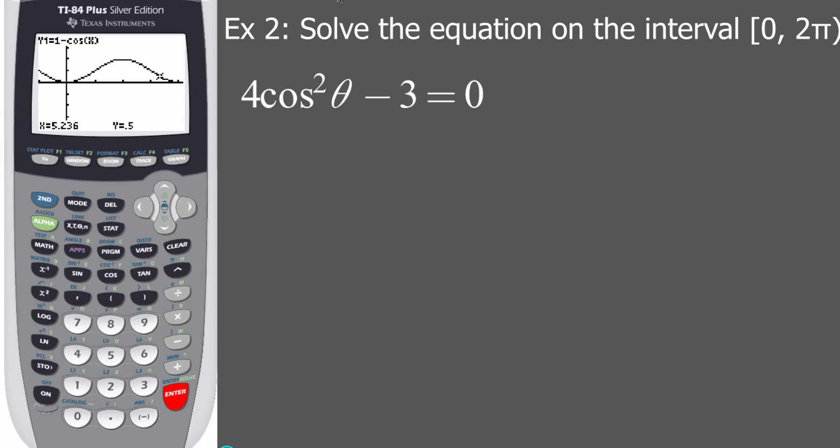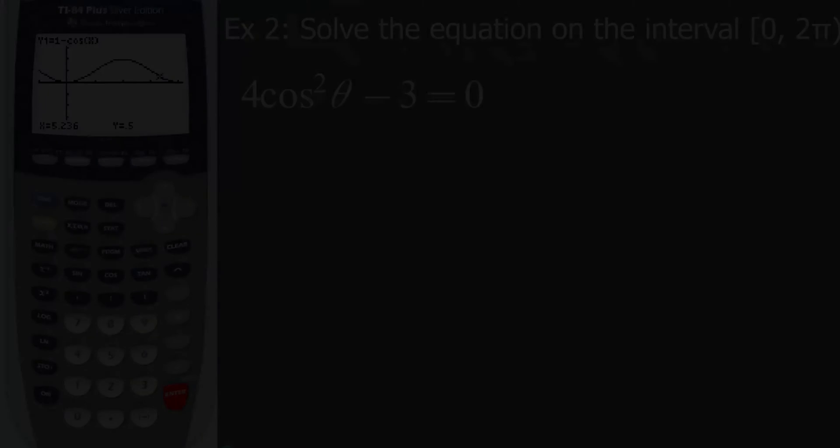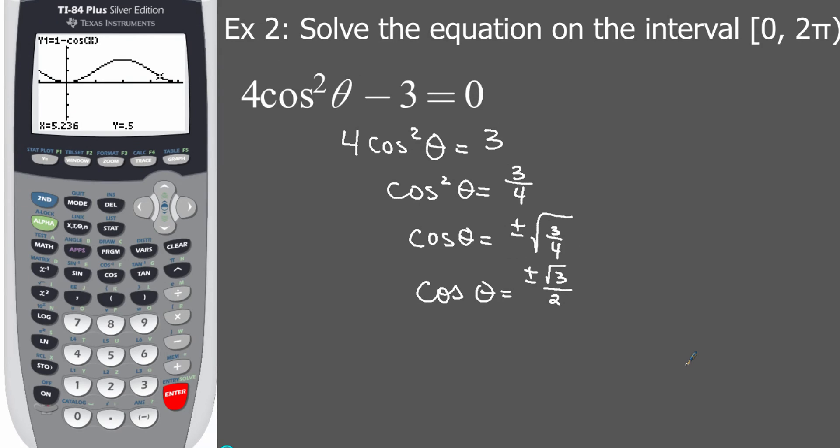Let's get out of example one. Now let's check out example number two. Go ahead and solve this one totally on your own and let's come back and see what you get. So how did you do with this one? Hopefully you did not forget to do the plus or minus when you took the square root of both sides.